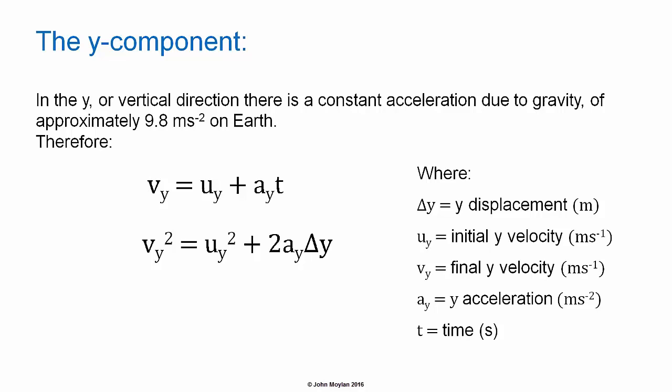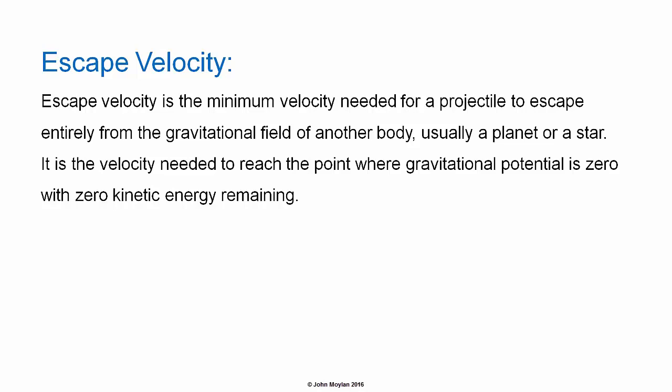Also, V subscript Y squared equals U subscript Y squared plus 2 A subscript Y delta Y, where V subscript Y is the final velocity in meters per second, U subscript Y is the initial velocity in meters per second, A subscript Y is the Y acceleration in meters per second squared, and delta Y is the Y displacement in meters. And delta Y equals U subscript Y T plus one half A subscript Y T squared, where delta Y is the Y displacement in meters, U subscript Y is the initial Y velocity, T is time in seconds, and A subscript Y is the Y acceleration in meters per second squared.